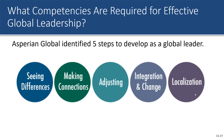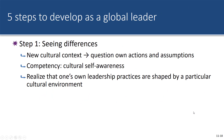A company identified five steps to develop as a global leader: see differences, make connections, adjust, integration and change, and localization. First, you have to see the differences — understand what the differences between cultures and business practices are. You can't assume everything is the same; you have to see the differences and address them.